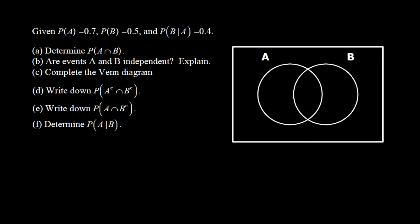There are lots of problems to work on here, A through F, but we'll focus on part A first, where we're being asked to determine the probability of A and B occurring. In the last video you were advised that when you're working with some events and you don't know whether they are independent or not, you should assume that they are dependent. So we're not just going to multiply the probability of A by the probability of B — that will only be true if you have independent events.